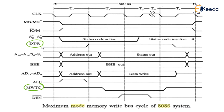Dear students, this is very easy. In the exam, don't get confused. First, draw four clock pulses. Second, check minimum or maximum mode — for maximum, put MX bar to ground. Third, check whether it is a memory operation: memory means M/IO bar high; I/O means M/IO bar low. Next, draw the status signals. For write, the transmit signal is high from the second clock pulse.